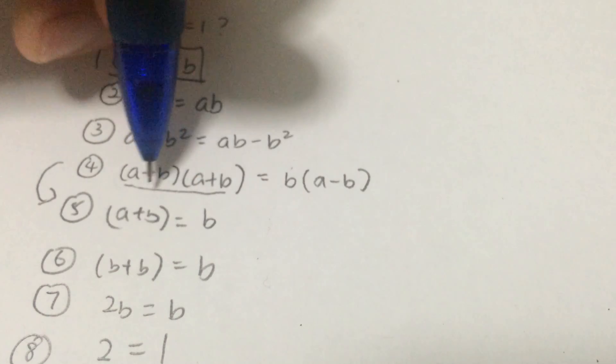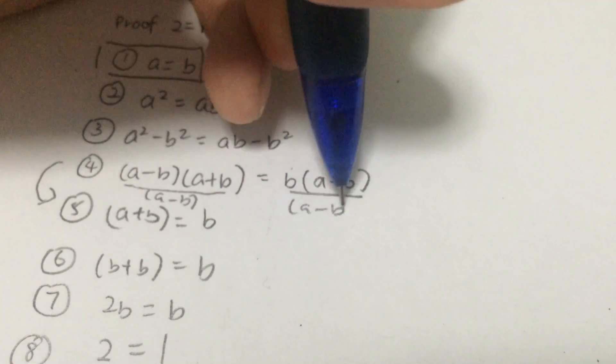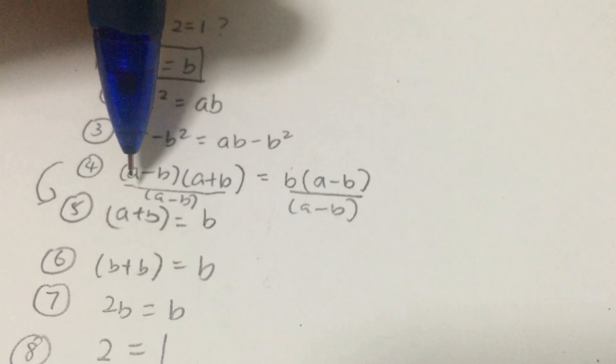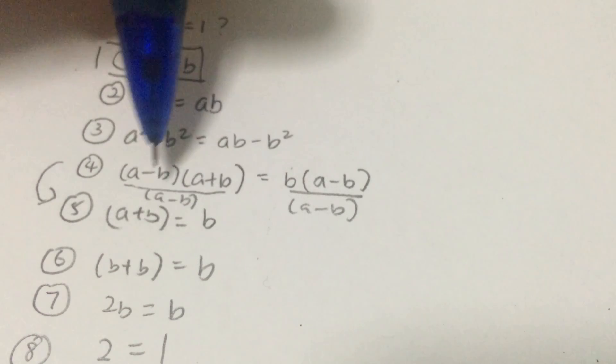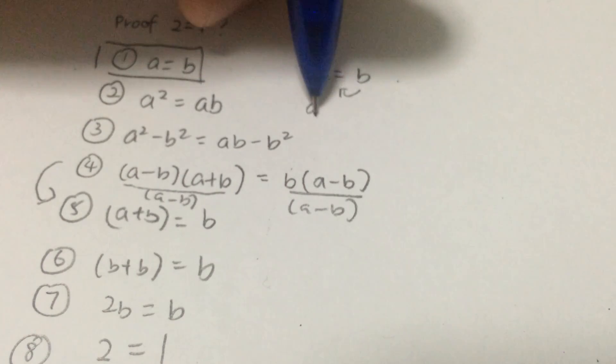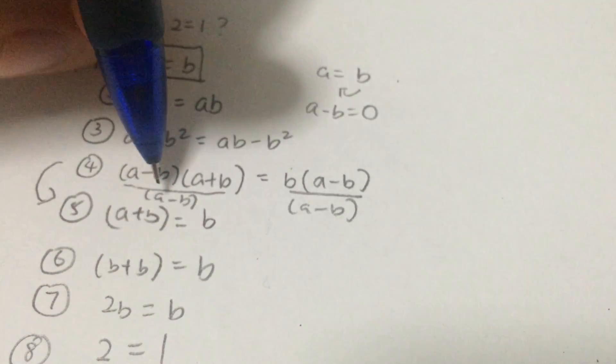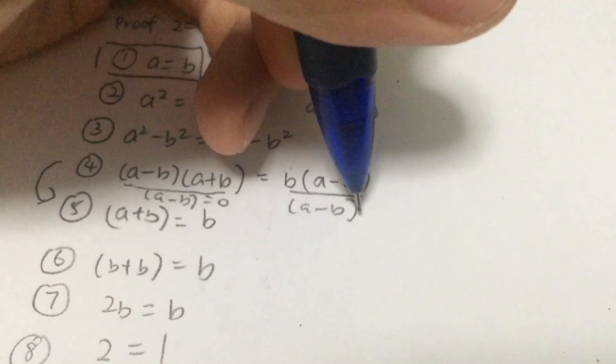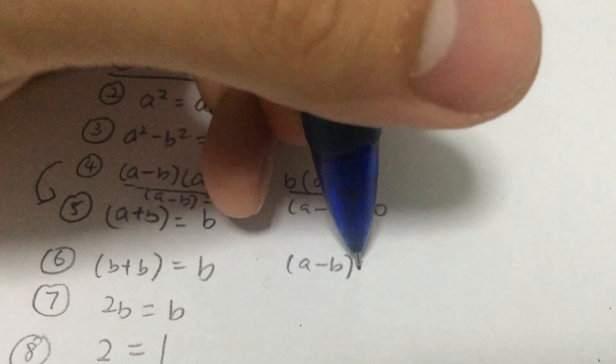We are having this issue of dividing the whole equation by zero. Because if a is equals to b, and if I were to bring this b over to the left hand side, it becomes a minus b, which is equals to zero. And I will have this divisible by zero problem. So we know that a minus b is equals to zero.